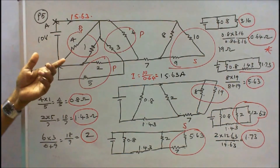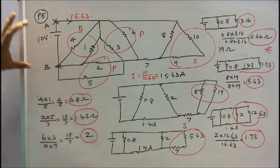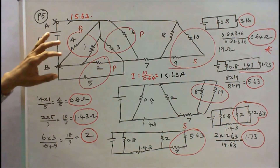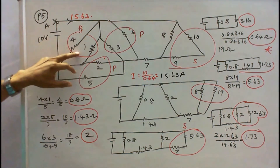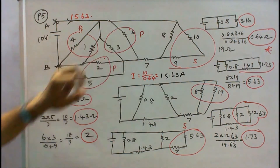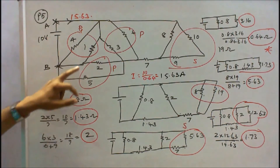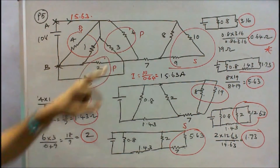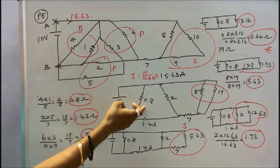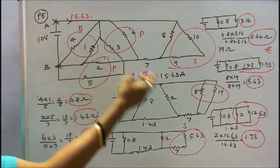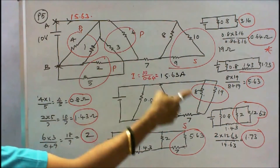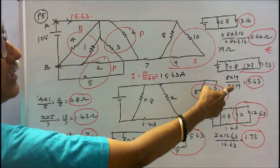Problem 5: 10 resistors connected as shown, all in ohms. Find total resistance across A-B and current supplied by the 10V battery. Identify parallel pairs: 4Ω and 1Ω in parallel = 4×1/(4+1) = 0.8Ω; 2Ω and 5Ω in parallel = 5×2/(5+2) = 1.43Ω; 3Ω and 6Ω in parallel = 3×6/(3+6) = 2Ω. Also, 10Ω and 9Ω in series = 19Ω; 19Ω in parallel with 8Ω: 8×19/(8+19) = 5.63Ω.